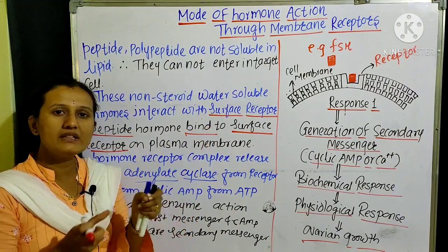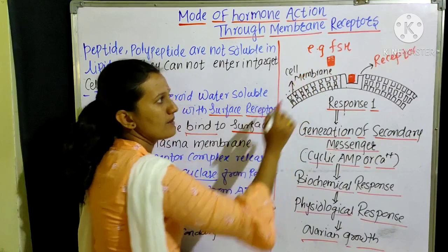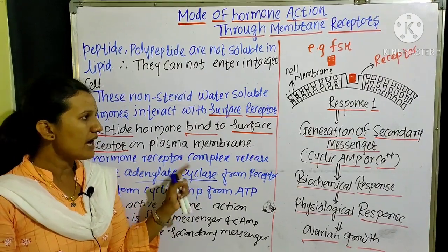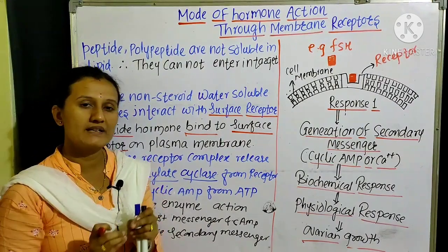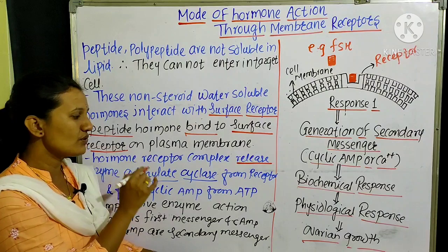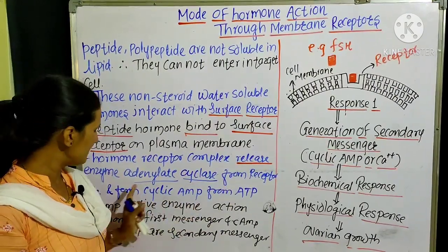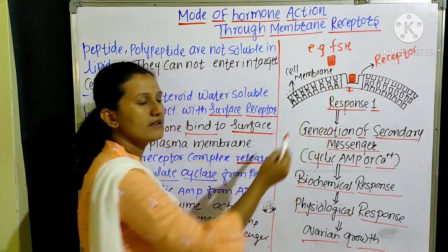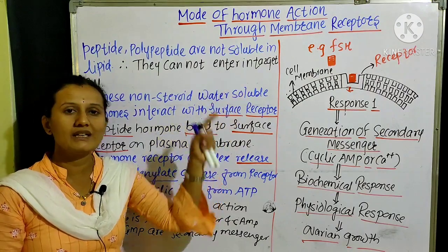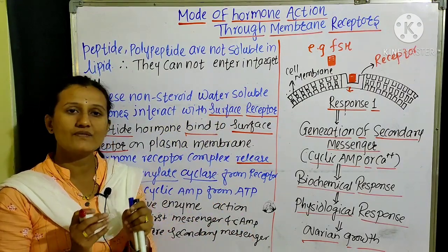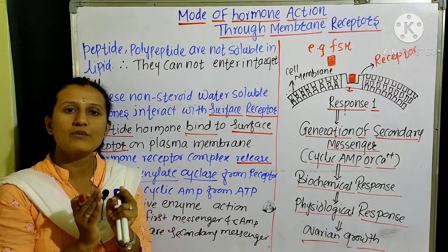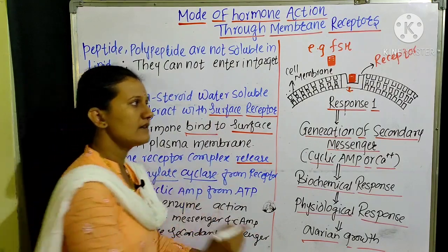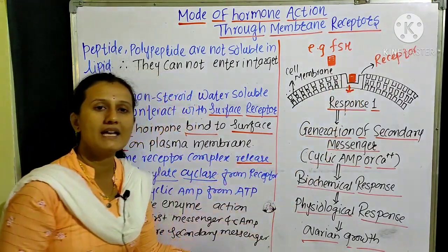The peptide hormone binds with the surface receptor — shown with the receptor in black and the hormone in red. The hormone and receptor form a hormone-receptor complex, also called a protein-receptor complex. When this hormone-receptor complex is formed, it releases an enzyme called adenylate cyclase from the receptor site. This is how the interaction at the membrane level triggers an intracellular response.